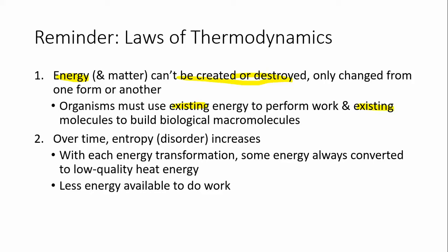Another limitation deals with the second law of thermodynamics: over time, entropy or disorder increases. Whenever you're doing an energy transformation, some of that energy will always be converted to low quality heat energy that is not available to an organism to do work. So while you cannot destroy energy, you can have energy be lost to an ecosystem because organisms are no longer able to take that energy and use it to do work. It's still there, but it's low quality energy.